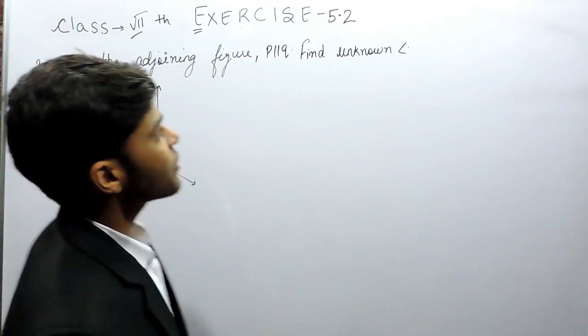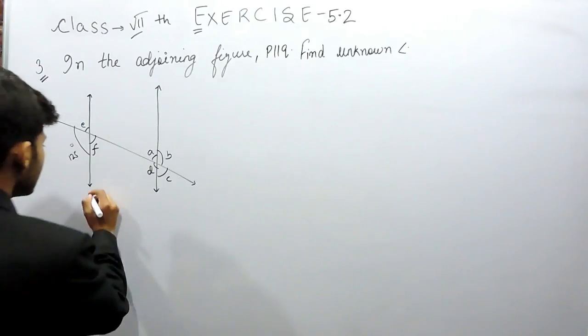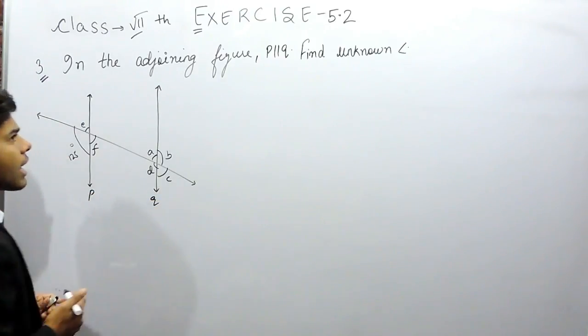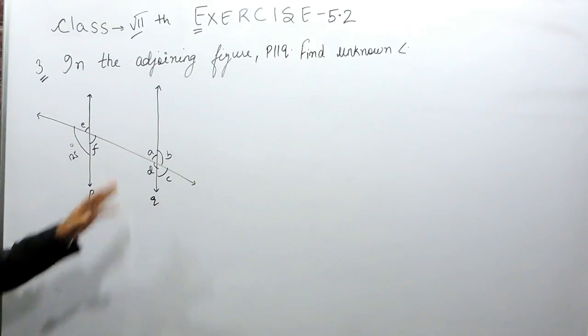Hello everyone. This is the third question of exercise 5.2. In this question, we are given that these two lines are parallel to each other and this is a transversal. We have to find all these unknown angles.